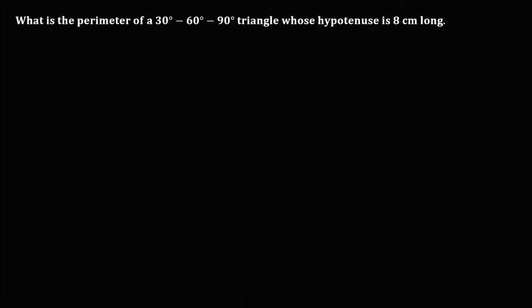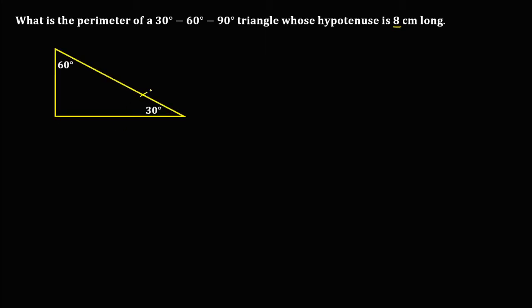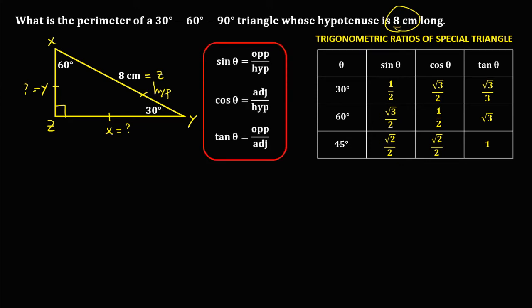For this given, what is the perimeter of a 30-60-90 degree triangle whose hypotenuse is 8 centimeters long? If this is our triangle and the hypotenuse equals 8 centimeters, we need to find the other two sides first. Let's label side X, side Y, and side Z. To solve, we'll use the trigonometric ratios of special triangles. We can use 60 degrees or 30 degrees as the angle; in this case, we'll use 30 degrees.